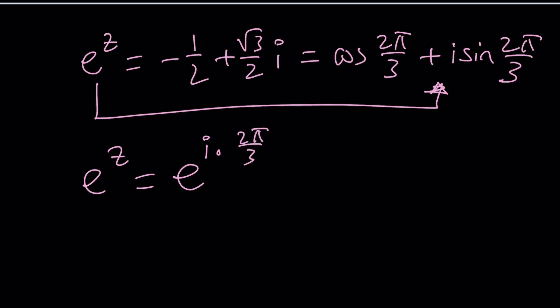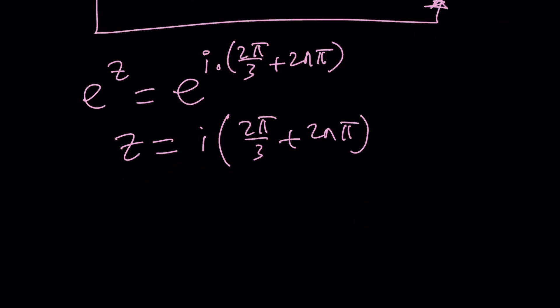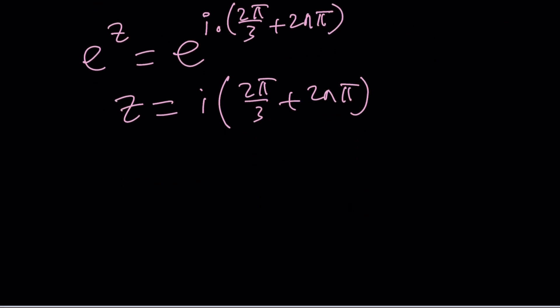But I've got to add multiples of 2 pi. So I could say 2n pi is added so that we can cover all the solutions. So from here, you can safely say that z equals i times 2 pi over 3 plus 2n pi. For example, if n is 0, z is i times 2 pi over 3. If n is 1, so on and so forth, you can pretty much find the solutions.